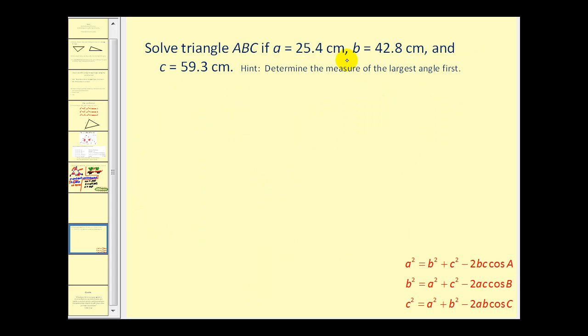Let's take a look at one more. Here we have the length of three sides of the triangle. Side A is 25.4 centimeters, side B is 42.8 centimeters, and side C is 59.3 centimeters.